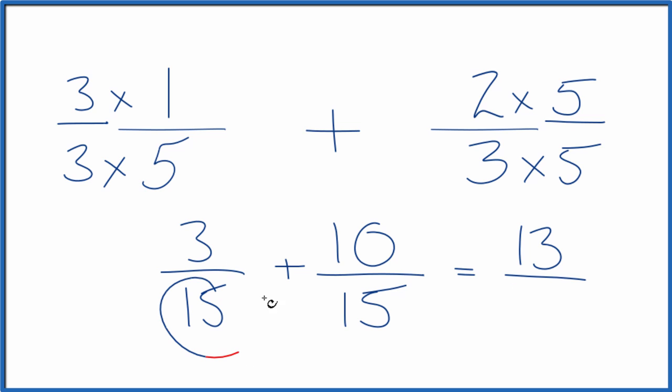And in adding fractions, if we have the same denominator, we just keep it the same. So 15 is our denominator. In answer to our question, one-fifth plus two-thirds equals 13 fifteenths.